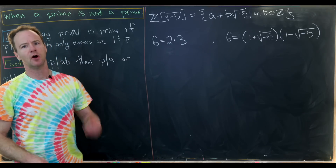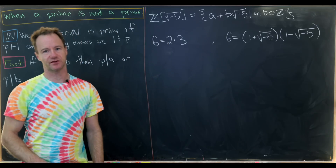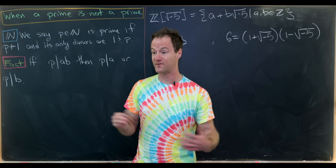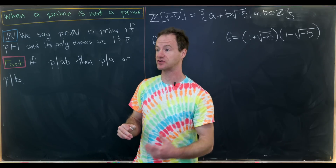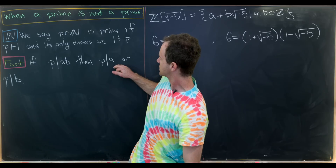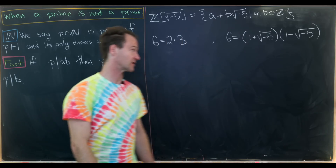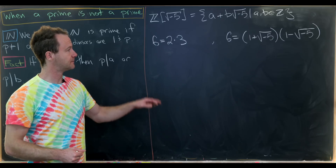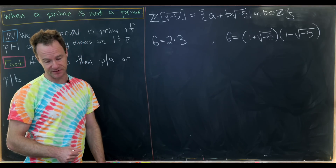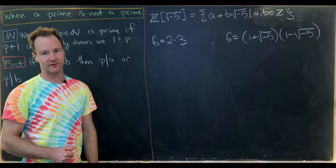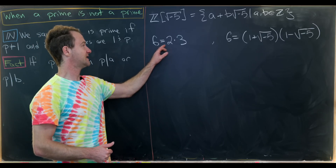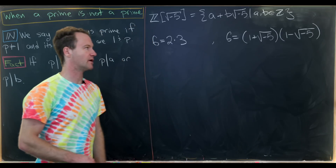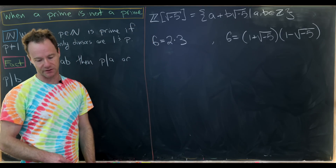Over the natural numbers we have unique factorization — that follows fairly quickly from the prime divisibility property. But here it's not clear if we have unique factorization: we've factored 6 both as 2 times 3, and also as (1 + √−5)(1 − √−5). So we'd like to check whether 2 is prime in this setting — or rather, whether it can be factored.